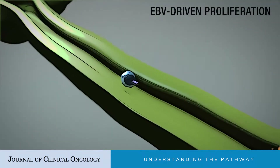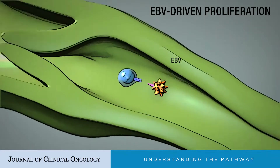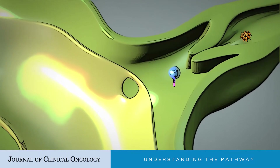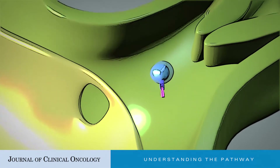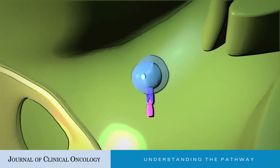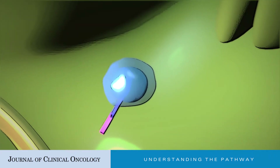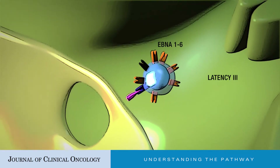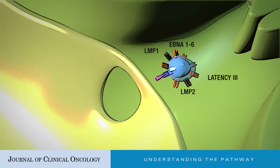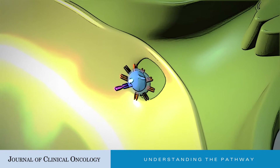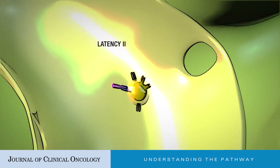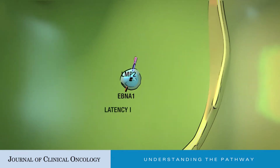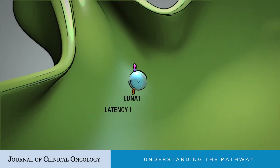After Epstein-Barr virus infection of a naive B cell, different programs of EBV-latent proteins are expressed that drive differentiation of the infected B cell in an analogous manner. Viral expression of the full panel of latent proteins EBNA-1 through EBNA-6 and LMP1 and LMP2 in activated B cells, to EBNA-1 and LMP1 and LMP2 in germinal center cells, to EBNA-1 alone in cycling memory B cells, recapitulates this same progression.